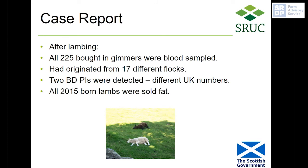They detected two border disease PI animals with different flock numbers, meaning they had come from separate holdings. Because they didn't want to risk retaining possible PI animals for breeding or selling them on to other farms, all the lambs born that year were sold fat.